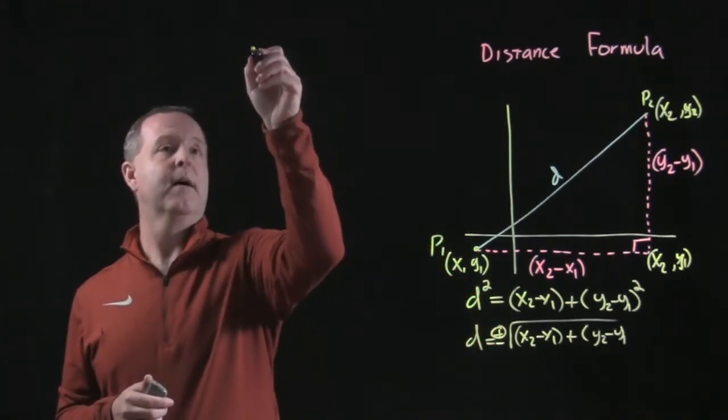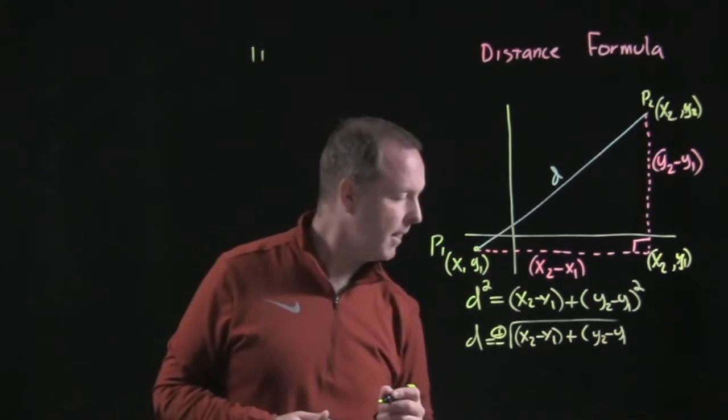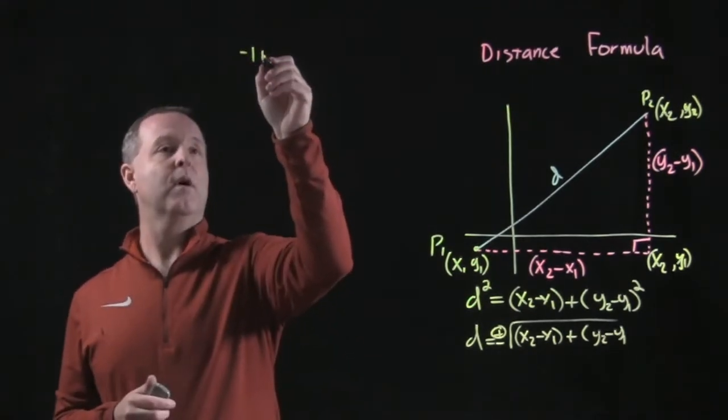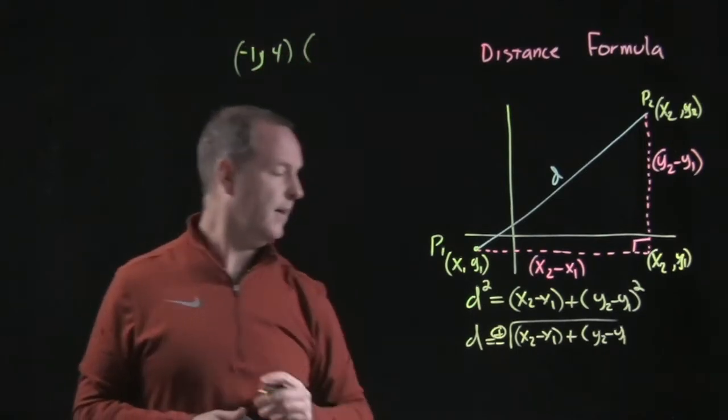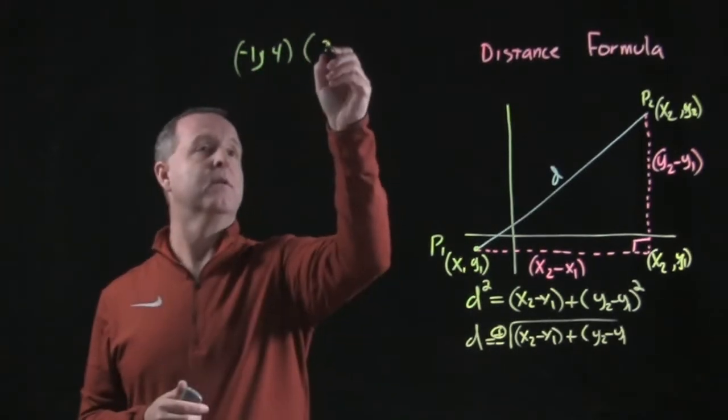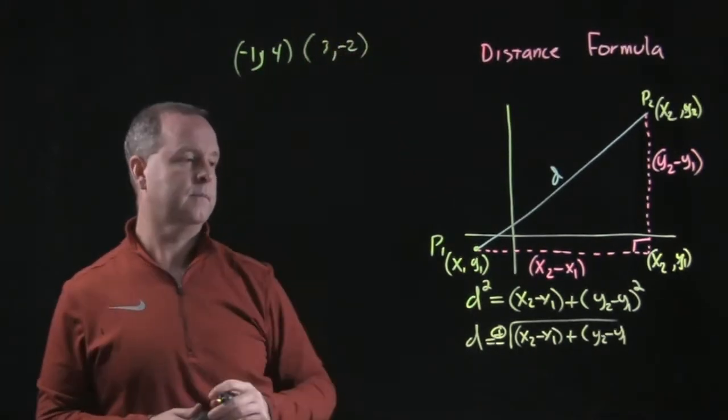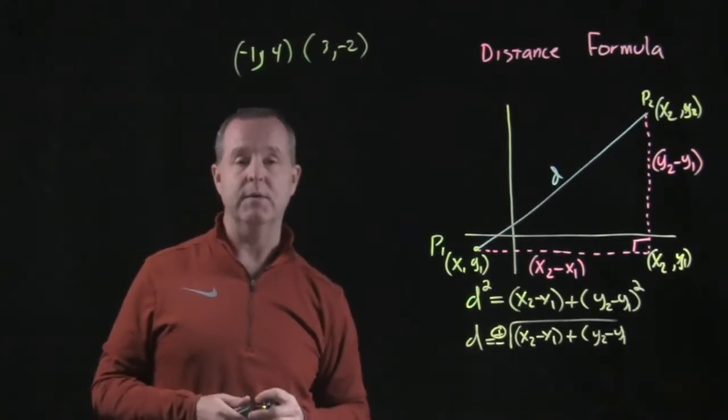So let's imagine that we have two points, the point negative one and four, and the other point three and negative two. I'd like to find the distance between those two points.